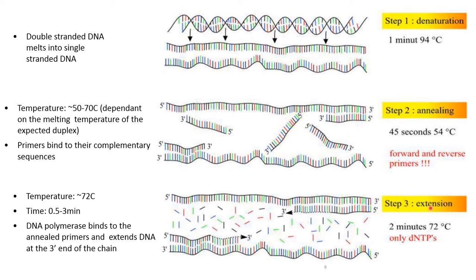The third step is extension, in which the temperature is 72 degrees centigrade for 2 minutes, though the time may vary from 0.5 to 3 minutes. At this temperature, DNA polymerase binds to the annealed primer and extends the DNA at the 3' end of the chain, adding all the dNTPs that have been added to the reaction mixture, thereby amplifying the DNA.